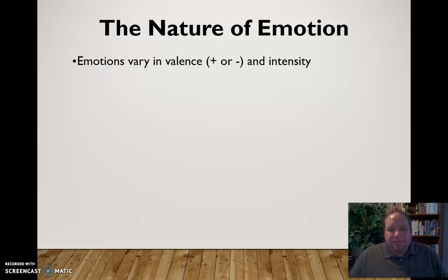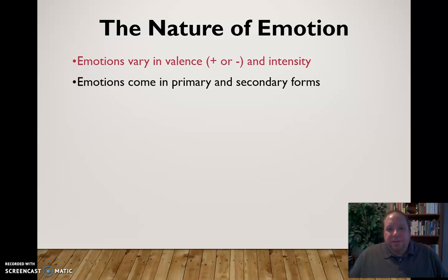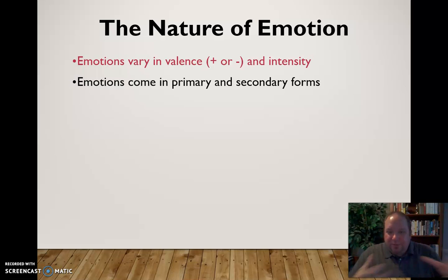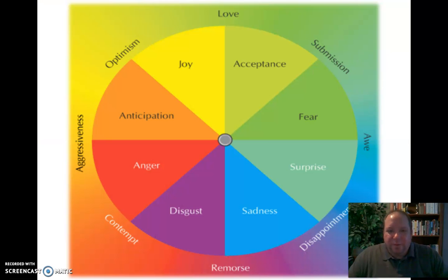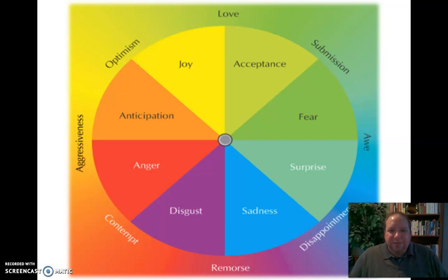So emotions will vary in valence and intensity and we need to be aware of that. Emotions also come in primary and secondary forms, almost like the color wheel from elementary school — primary colors and secondary colors made from mixing them. Emotions exist in primary and secondary forms as well. For example, anger and disgust are more primary emotions, and when you combine the two you get contempt — looking down on someone — as a secondary emotion.